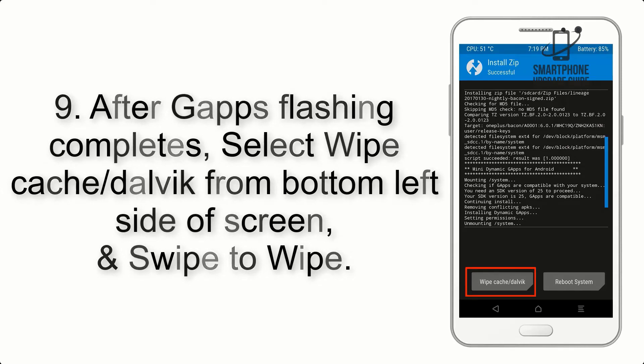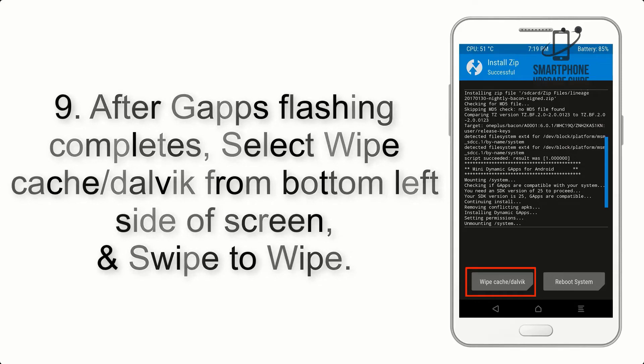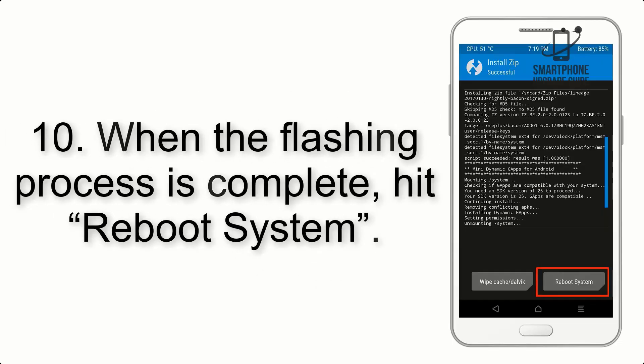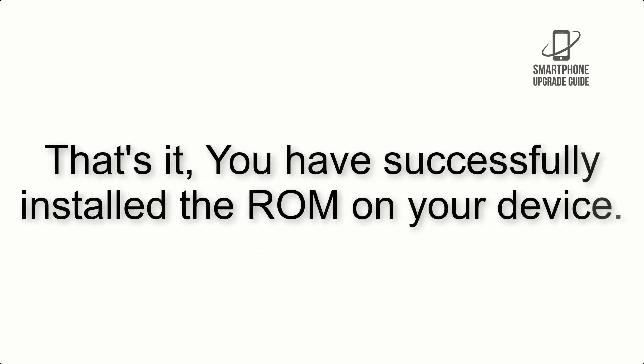Step 8: Flash the GApps zip package in the same manner. Step 9: After GApps flashing completes, select Wipe Cache and Dalvik from the bottom left side of the screen and swipe to wipe. Step 10: When the flashing process is complete, hit Reboot System. That's it — you have successfully installed the ROM on your device.